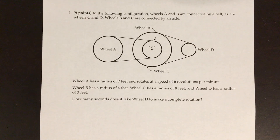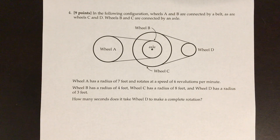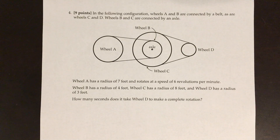In the following configuration, wheels A and B are connected by a belt, as are wheels C and D. Wheels B and C are connected by an axle. Wheel A has a radius of 7 feet and rotates at 6 revolutions per minute. Wheel B has a radius of 4 feet, wheel C has a radius of 8 feet, and wheel D has a radius of 3 feet. How many seconds does it take wheel D to make a complete rotation?